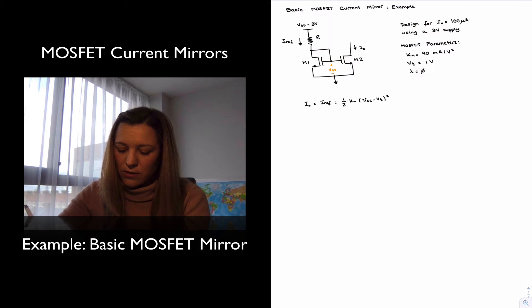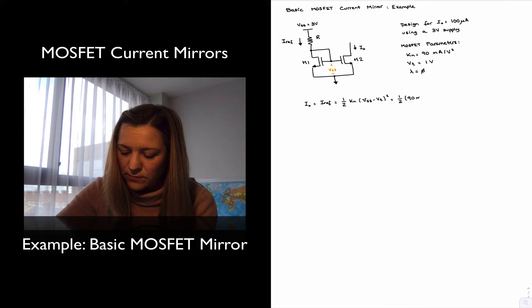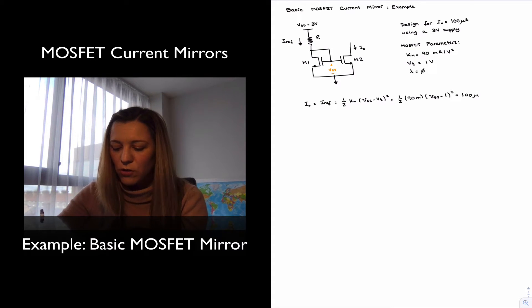Alright, so I can enter my values there. This will be one half of 90 milli times VGS minus the threshold voltage is 1 squared. And I want that current I out to be equal to 100 micro. So I can solve this second order equation for VGS.